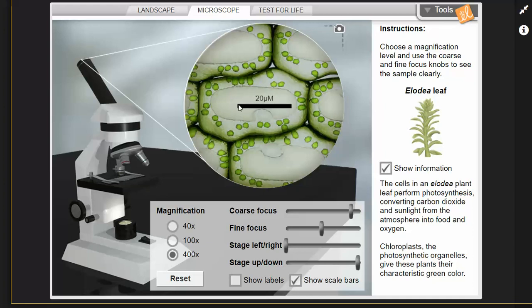So this is showing you that across the middle of this structure, whatever this is, is 20 micrometers. Okay, so this is the micrometers, that little like u shape, that's micro, and then the m is meters. So this is 20 micrometers which is super super super small.